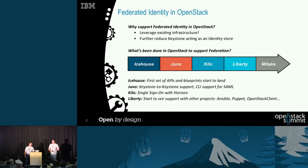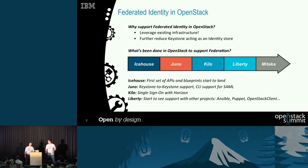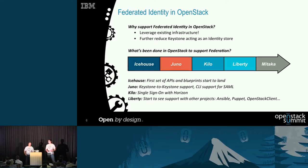A little bit of history of federated identity in OpenStack. Why did we want it? We could store users in the SQL backend or use our LDAP plugin, but they're not as secure as a pure federation approach because Keystone is still seeing passwords. By creating a trust relationship between Keystone and an identity provider, Keystone will never see the password — it's a lot more secure, and it's just where we want to be.